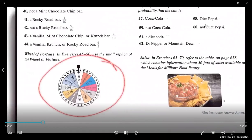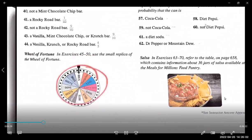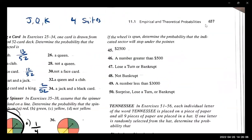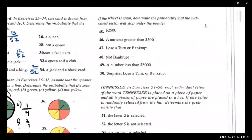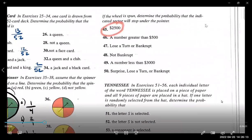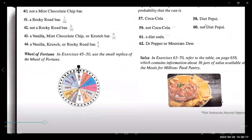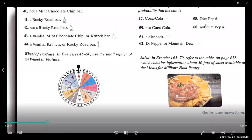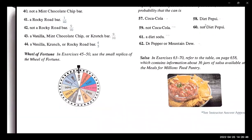Let's look at the Wheel of Fortune. It says use a small replica of the wheel of fortune — here it is. If the wheel is spun, determine the probability that the indicated sector will stop under the pointer. For $2,500, we have to figure out the total number of sectors. Counting them: one, two, three, four, five, six, seven, eight, nine, ten, eleven, twelve. So 12 total. And there's only one $2,500 sector, so one out of 12.